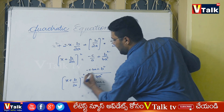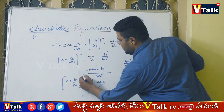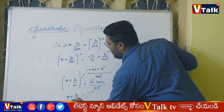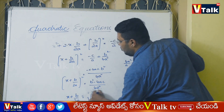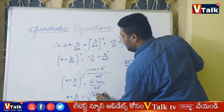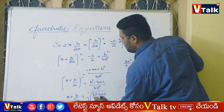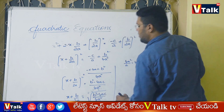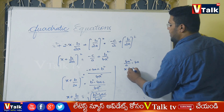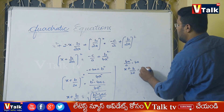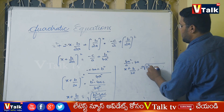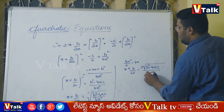Taking the square root on both sides: x plus b by 2a equals root over b squared minus 4ac by 4a squared, which simplifies to x plus b by 2a equals plus or minus root over b squared minus 4ac by 2a, since the square root of 4a squared is 2a.